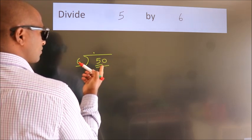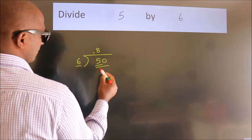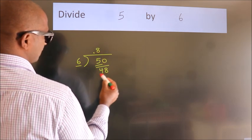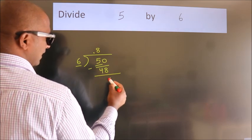A number close to 50 in the 6 table is 6 times 8, which is 48. Now we should subtract. We get 2.